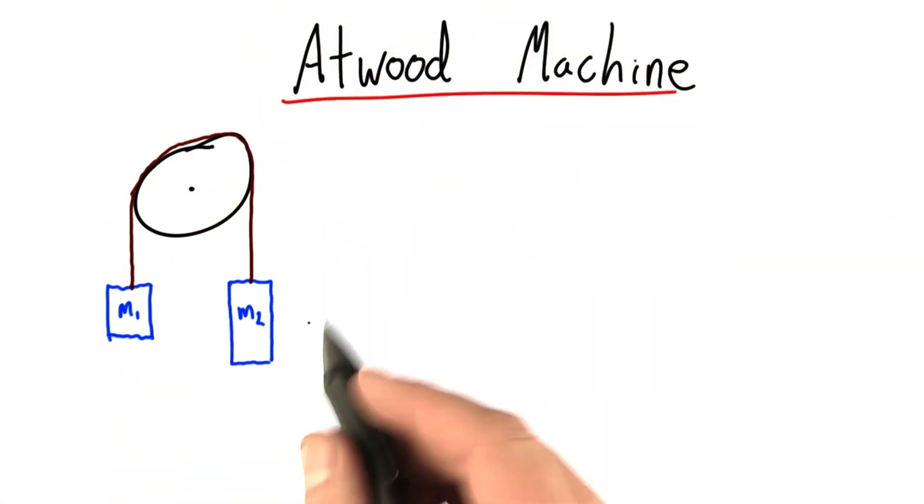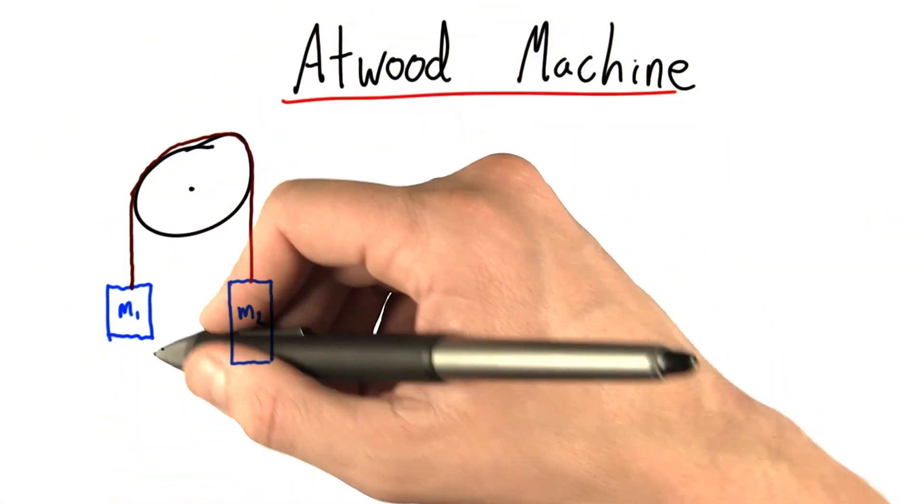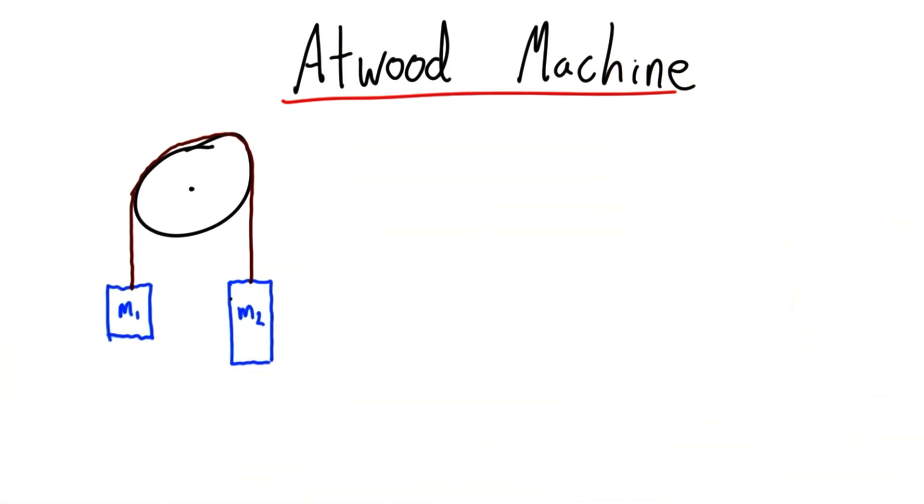What we're going to do is solve this question algebraically to get an equation that tells us if we let this system go, what will happen?